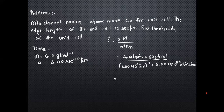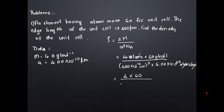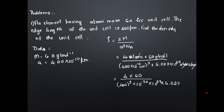In the calculation, units of atoms and moles cancel, leaving grams per centimeter cube. The powers: 10⁻¹⁰ cubed gives 10⁻³⁰; combined with 10²³ from Avogadro's number gives 10⁻⁷. Simplifying the expression gives the final density value.